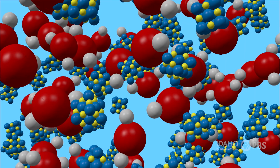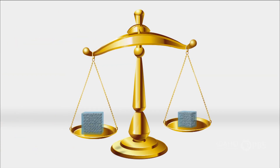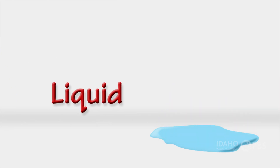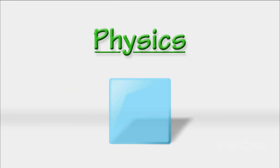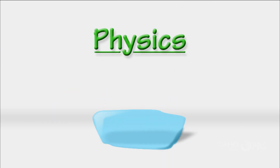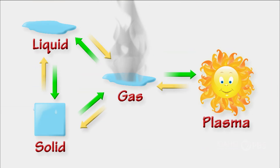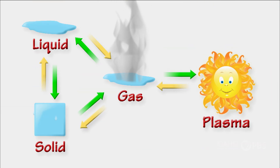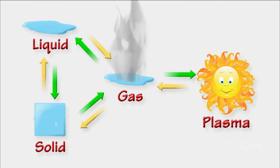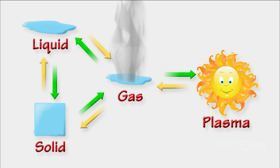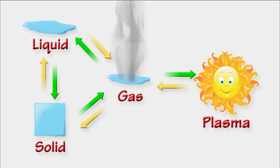Matter is made of atoms. Matter has mass or weight. Matter can also change from one form to another. The study of matter and the changes it goes through is called physics. Matter comes in four basic states or phases: a solid, a liquid, a gas, or plasma.